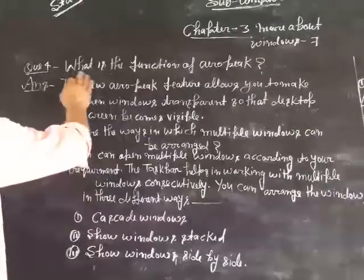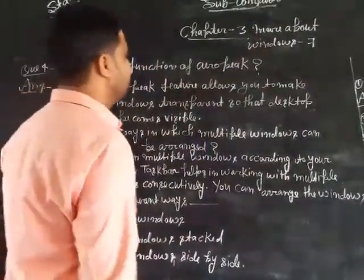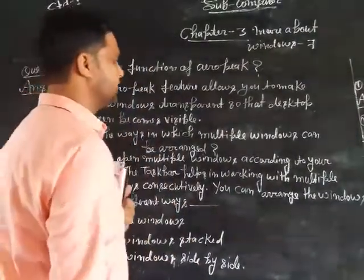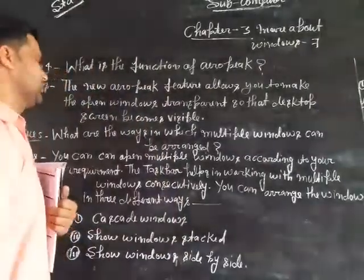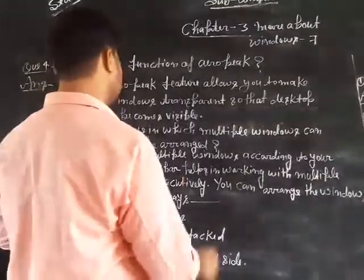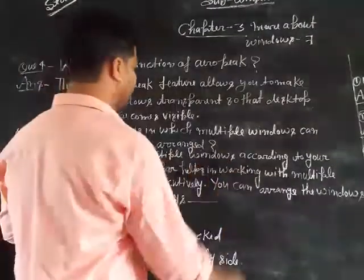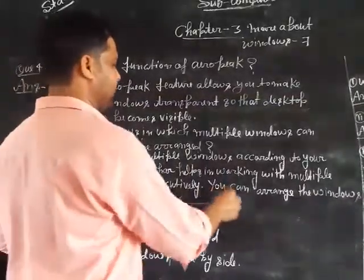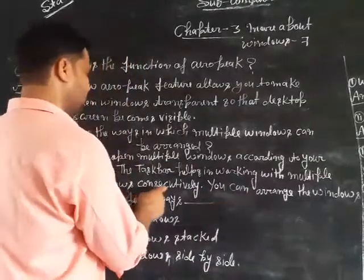Now write the question and answers. What is the function of the Aero Peek? The Aero Peek feature allows you to make open windows transparent so that the rest of the screen becomes visible. What are the ways in which multiple windows can be arranged? You can open multiple windows according to your requirement, and the taskbar helps in working with multiple windows.